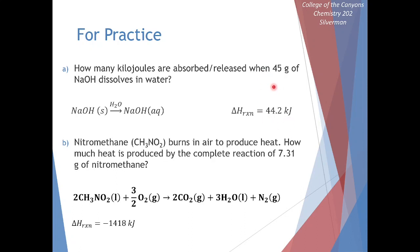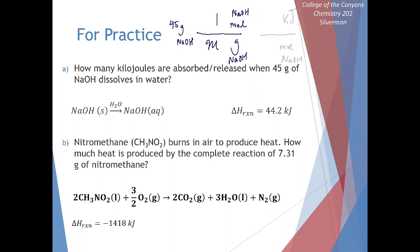We can use this as a conversion factor. If we have 45 grams of sodium hydroxide, we can figure out how many kilojoules of heat are absorbed. Our first step: convert to moles using molar mass. Our second step: use the enthalpy value in conjunction with the balanced reaction to convert to kilojoules. Based on our balanced reaction, one mole of sodium hydroxide absorbs 44.2 kilojoules of energy.